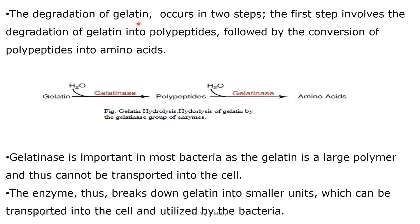The degradation of gelatin takes place in two steps. In the first step, gelatin is degraded into polypeptides, and in the second step these polypeptides are converted into amino acids. Gelatinase is important in most bacteria because gelatin is a large polymer that cannot be transported into cells, so it must be broken down into its monomers — amino acids — which are then taken up by the cell.